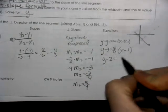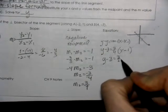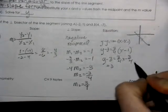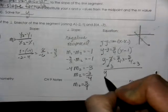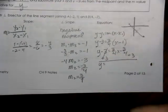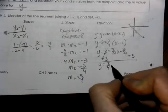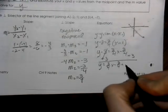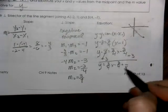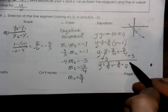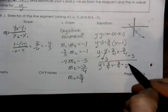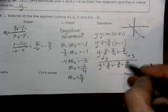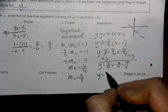So distribute this 3 fourths through, and then add the 3 to the other side. To add the 3 to the other side we're going to need common denominators.